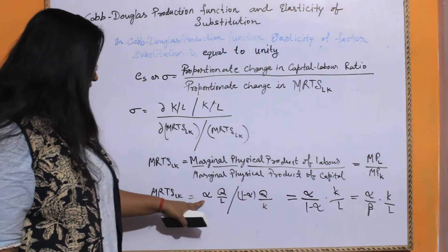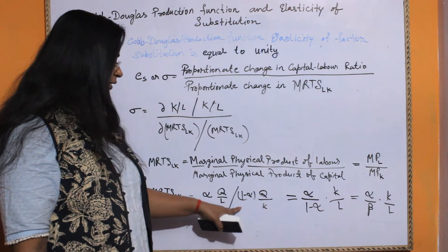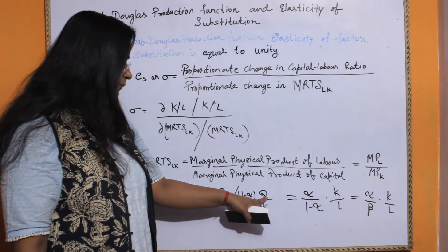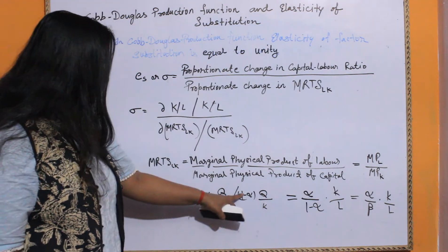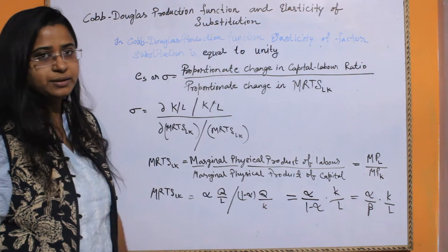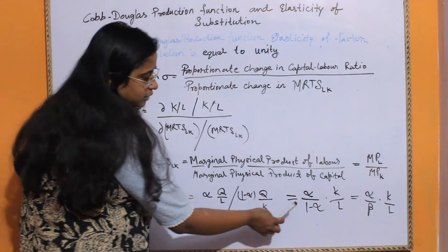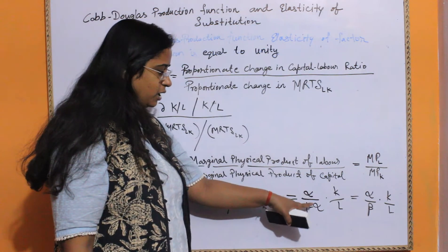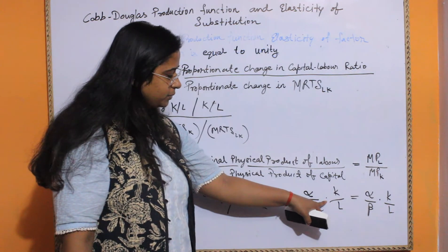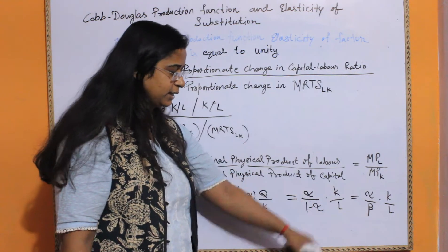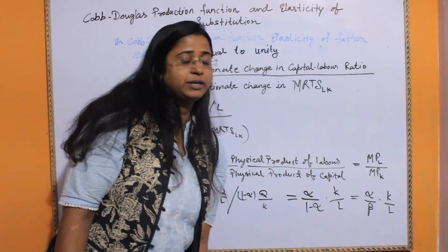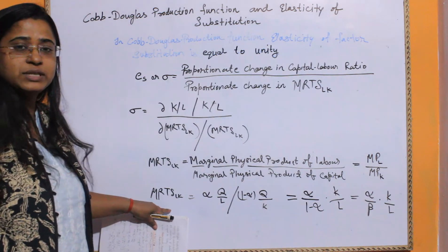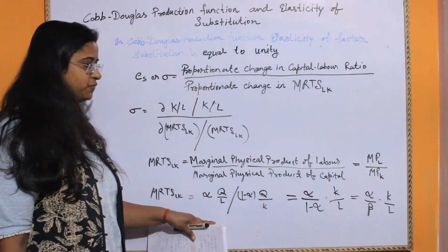We can also write MRTS of L for K as alpha times K upon L, divided by 1 minus alpha multiplied by Q upon K. This simplifies to alpha upon beta (or 1 minus alpha) multiplied by K by L.